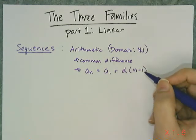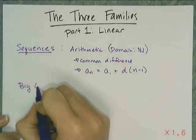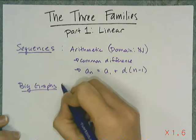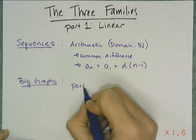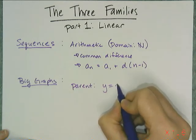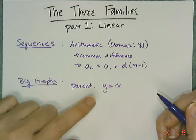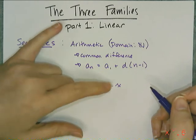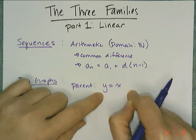The next thing we did was move on to big graphs. In the big graphs unit we found a couple of things out. First we learned that the parent function of the linear family is y = x. To clarify, a parent function is the most basic type of equation that still belongs to a particular family, so the most basic equation you can have that's still linear is y = x.